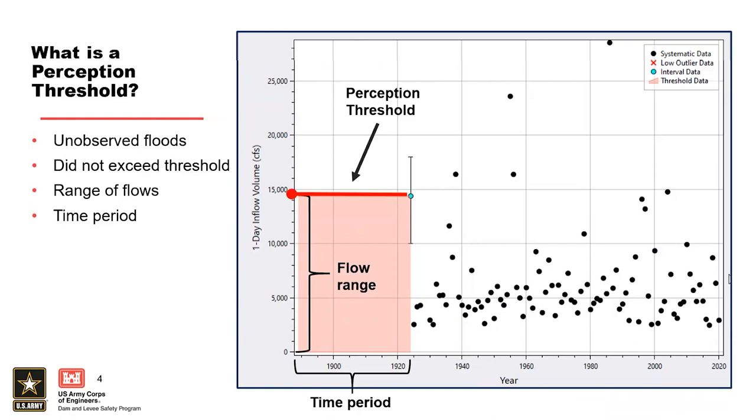Since no floods were actually observed during this time period, this means that the floods that did occur must have been less than that threshold. In other words, when we do not have observations or data for specific floods during a period of time, we can still infer that floods were less than some magnitude based on the available data that we have.